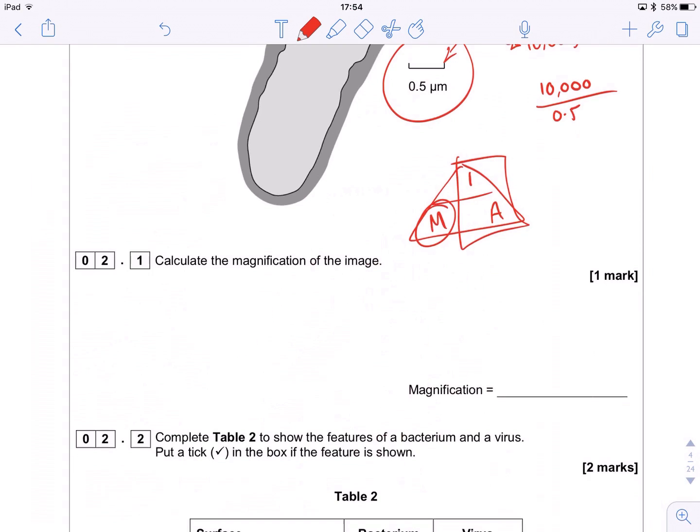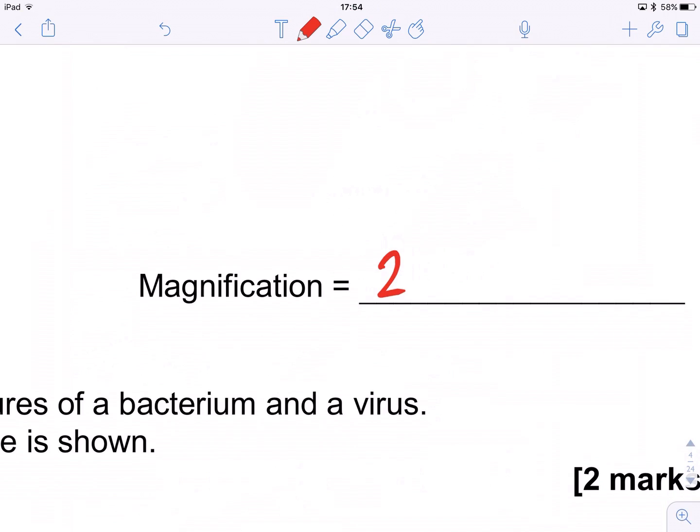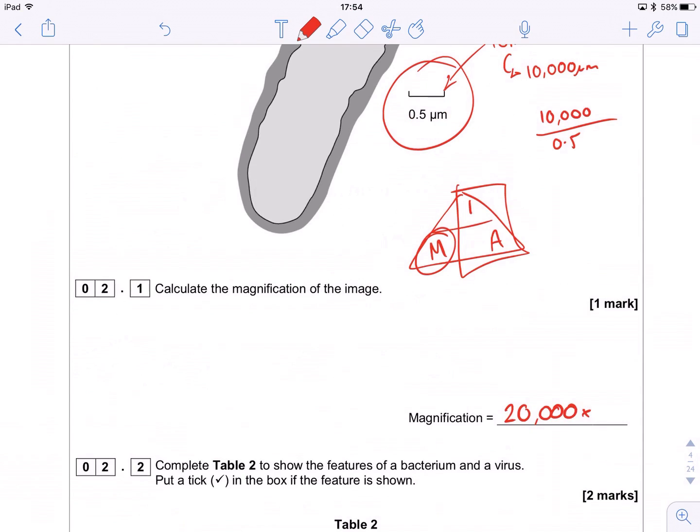The numbers should work out quite nice in these questions and it always should be kind of logical. If you get a small magnification, then that's a little bit ridiculous because you know bacteria are properly small. So a little bit of common sense with this.